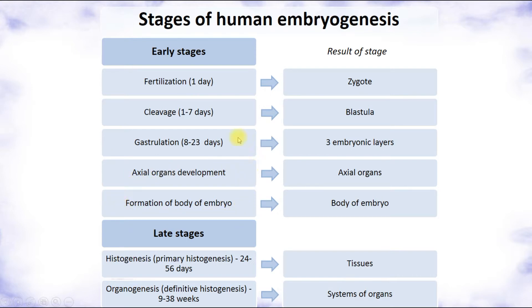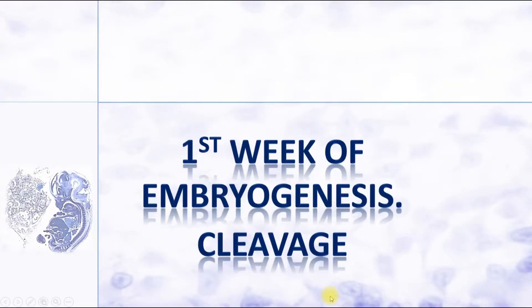Late stages of human embryogenesis include histogenesis — the formation of tissues — and organogenesis — the development of organ systems. Early stages are also called the embryonic period, while late stages include the fetal period. Beginning from week 13, the human embryo is called a fetus.